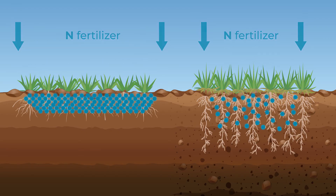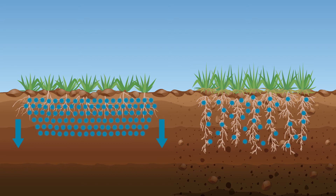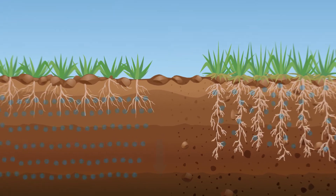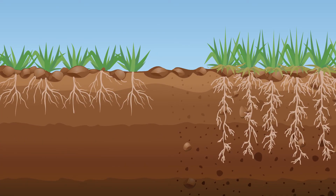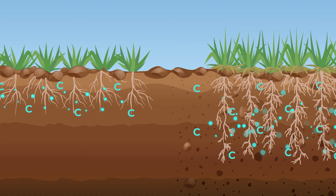In comparison, the roots under the ryegrass are much shorter and the soil is much more compacted. Deep-rooting grasses help improve the soil structure and store much more carbon in the soil to offset against farm emissions.